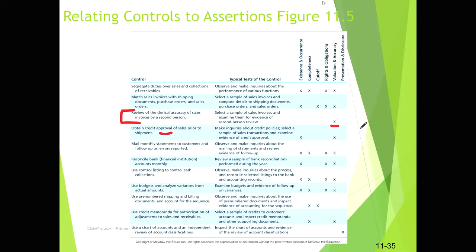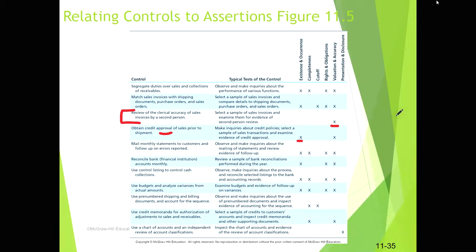Getting approval prior to shipment ties directly to validity. Anything that is approved is valid — validity is at the heart of existence and occurrence assertions. To test this, we can look at a sample of sales transactions for evidence of credit approval, or use data analytics to gather the entire population of sales transactions and check whether any lack a credit approval. If every transaction had approval, we can conclude the control is operating effectively.